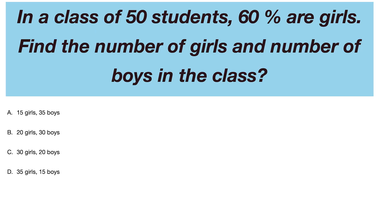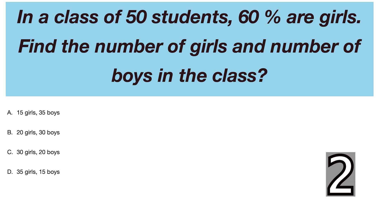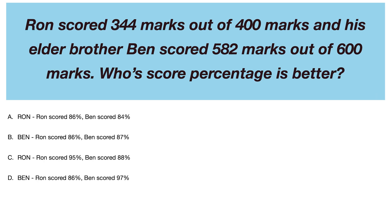Next question: in a class of 50 students, 60% are girls. Find the number of girls and the number of boys in the class. Next: Ron scored 344 marks out of 400, and his elder brother Ben scored 582 marks out of 600. Whose score percentage is better?